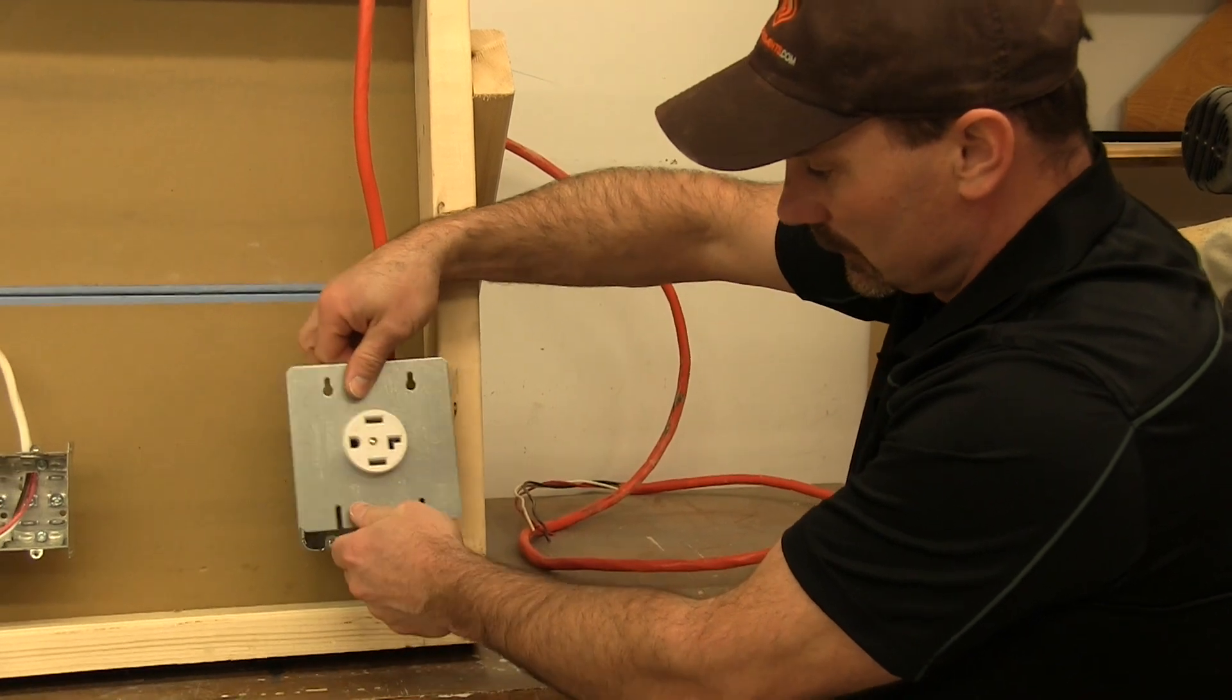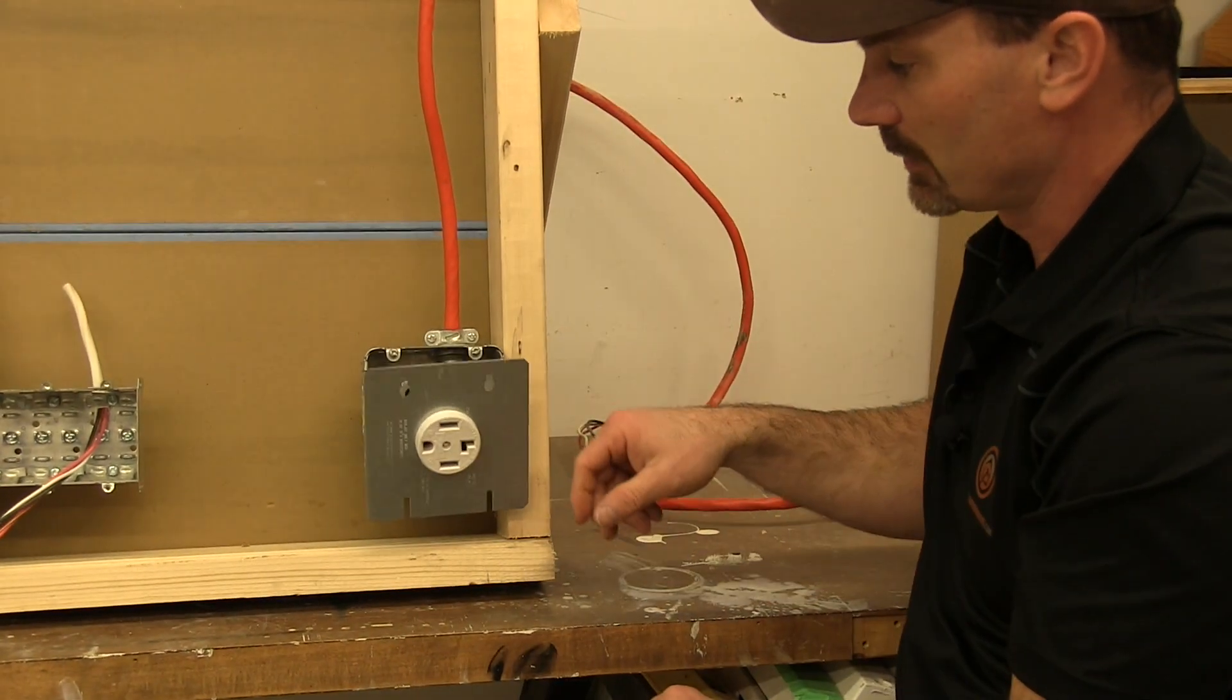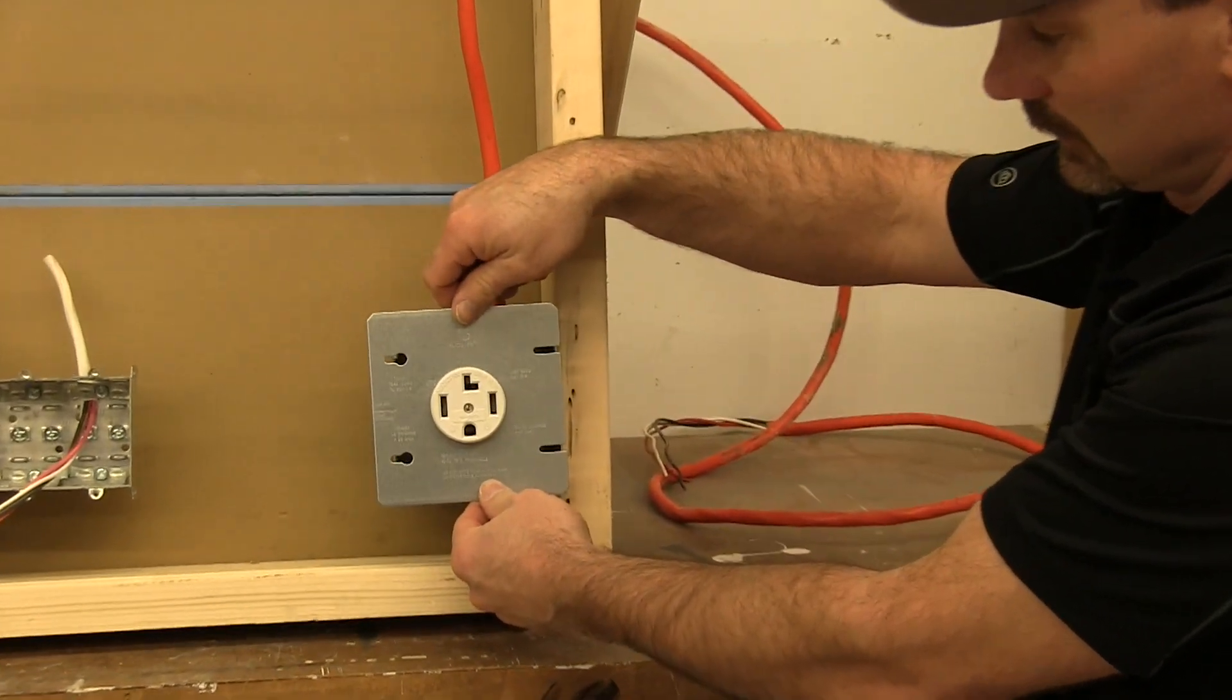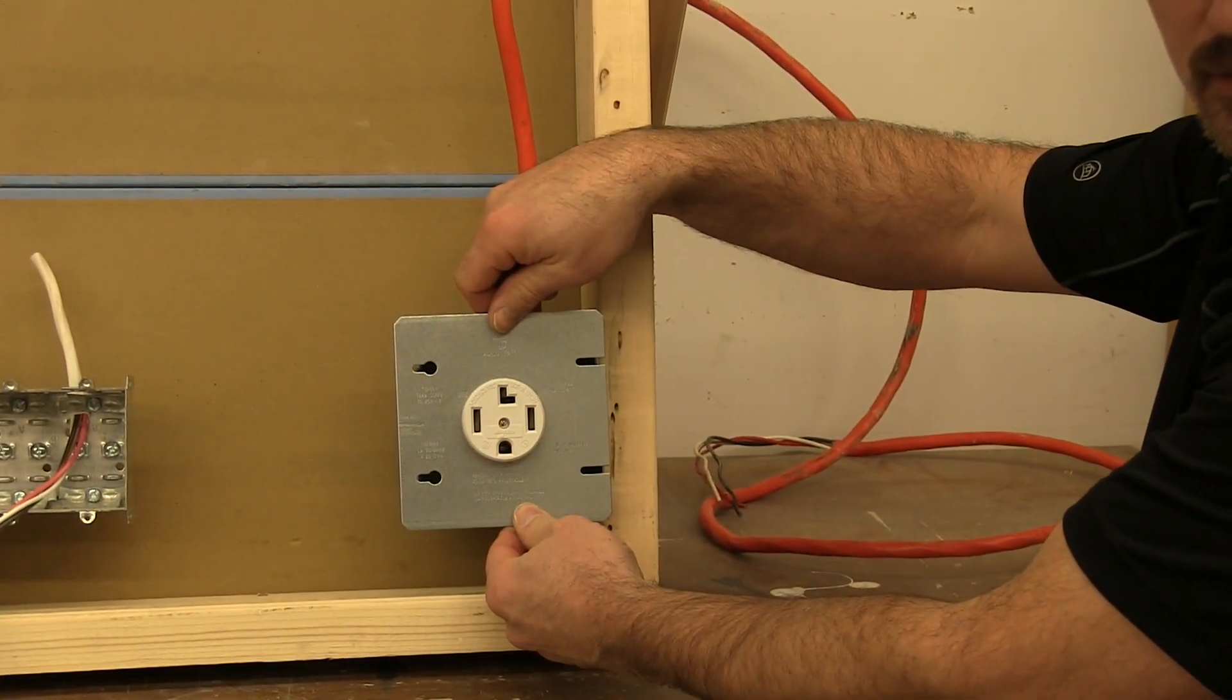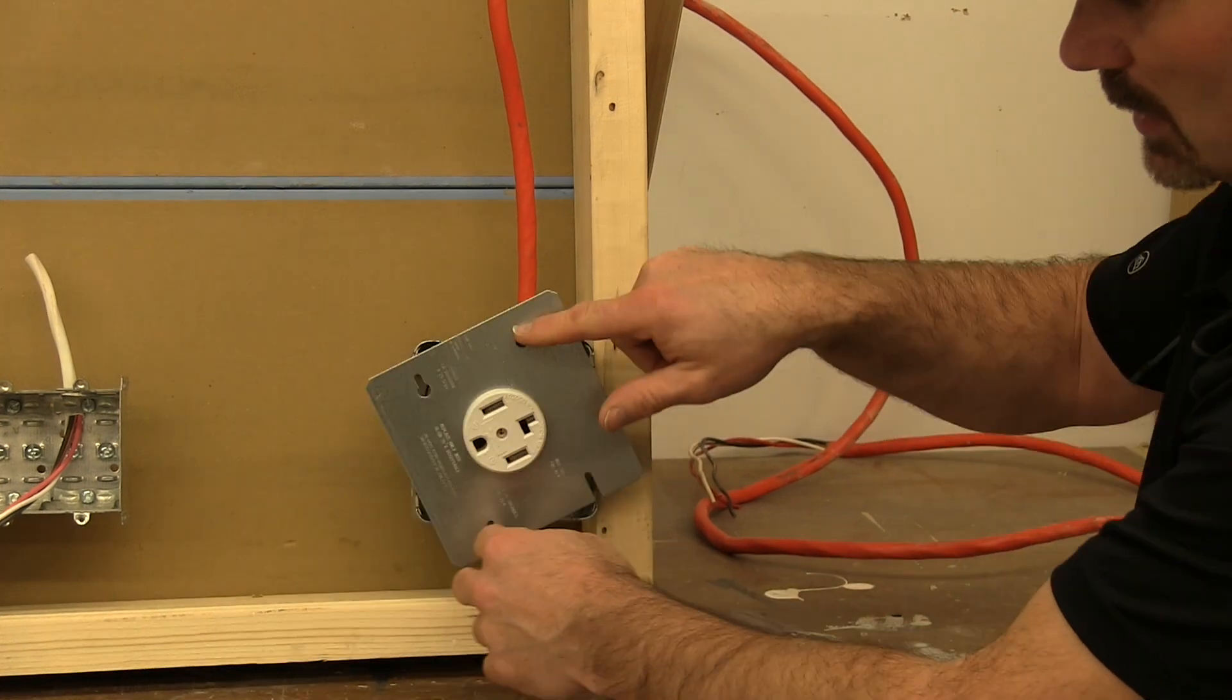And also the direction of how your box is already mounted on the wall is going to matter too, because I can't, the way this box is, I couldn't put this in this direction because it doesn't line up with any of the mounting holes.